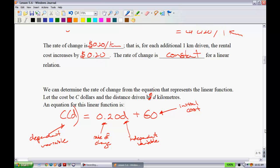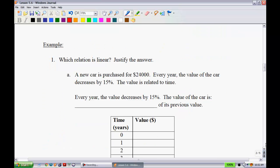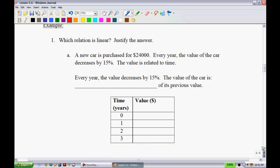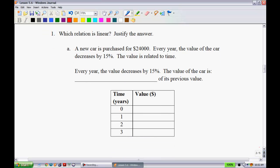So let's take a look at a couple of specific examples identifying if they are linear or not. Example: which relation is linear, justify the answer. Let's start with A. A new car is purchased for $24,000. Each year, the value of the car decreases by 15%. The value is related to time. So each year, the value decreases by 15%. That means the value of the car is going to be 100%, minus 15%. So each year, the car is going to be worth 85% of what it was worth from the year before. So that means year 0, when you go and buy this car, it's $24,000.